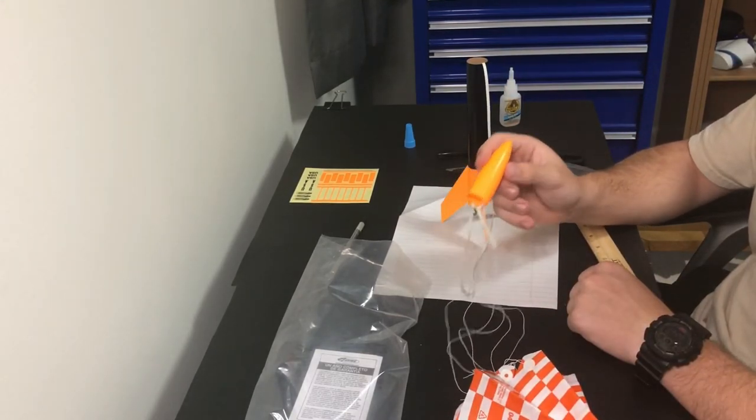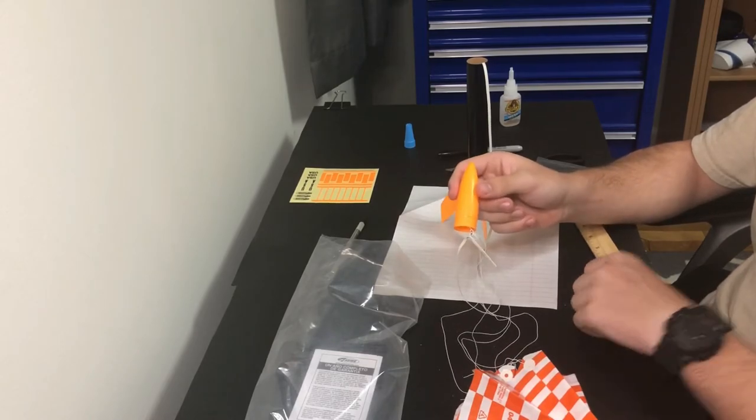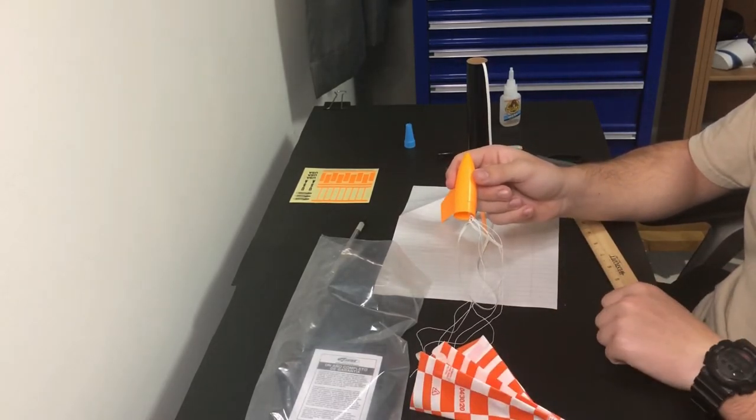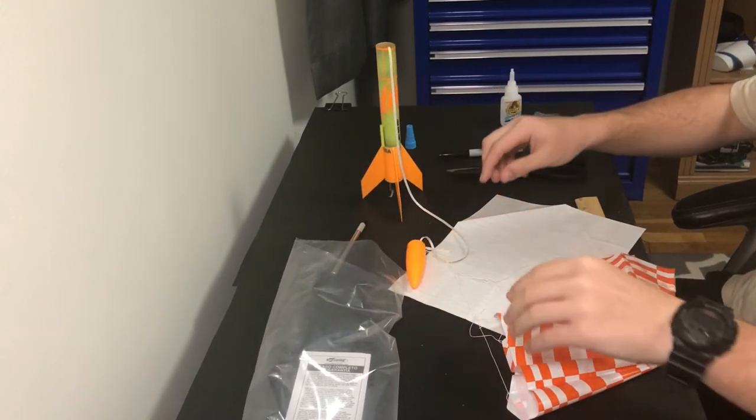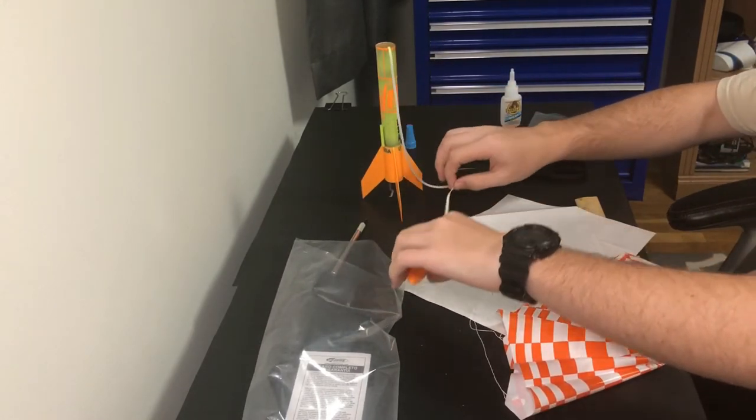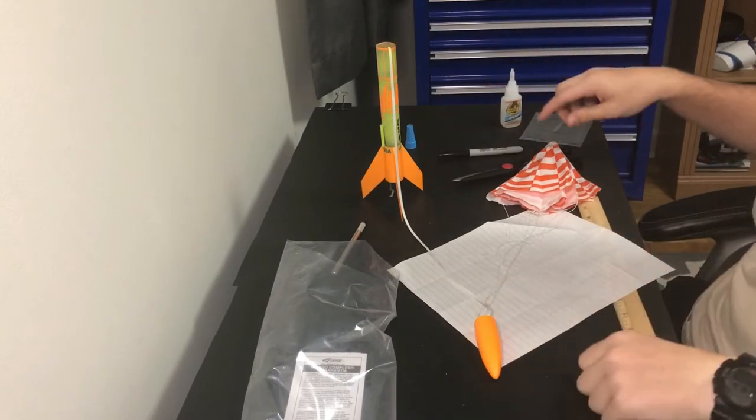The last step is to add the decals, and then I'm going to show you how to fold up this parachute. After you've designed your rocket to the best of your abilities, it is now time to fold your parachute.